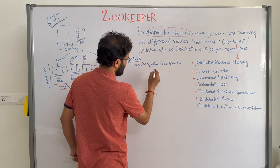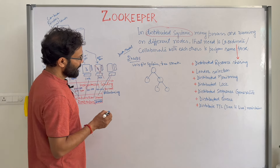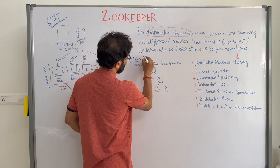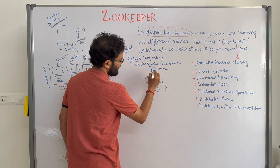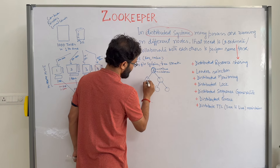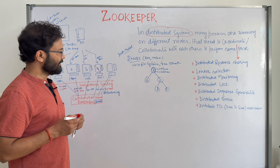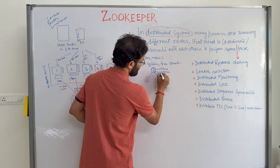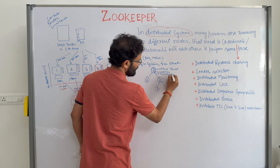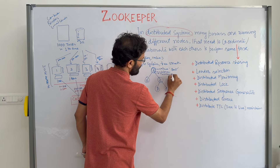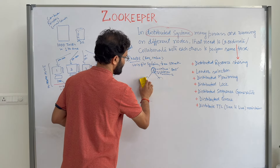ZooKeeper's ZNode is like a Unix file system — a tree structure. Each node stores a key-value pair: one value you provide, plus children information. For example, node A has two children, node C has two children, and node B has none. ZooKeeper also maintains versioning — if you update a value, the version number increments. This is how information is stored in ZNodes.